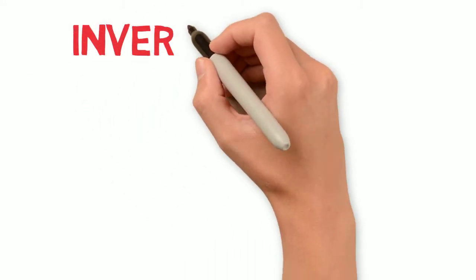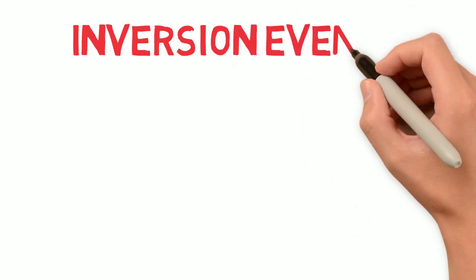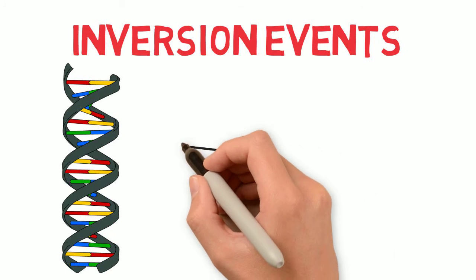Inversion events reverse a region of DNA. Since the DNA is double-stranded, an inversion affects the two strands at the same time.